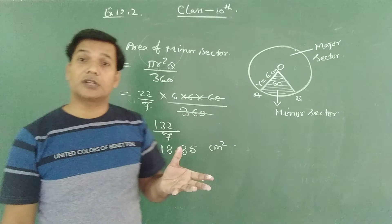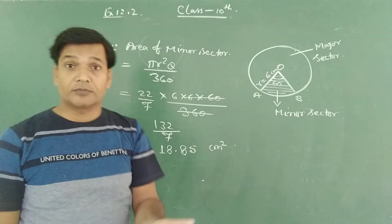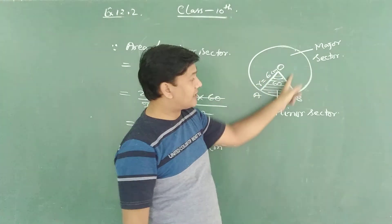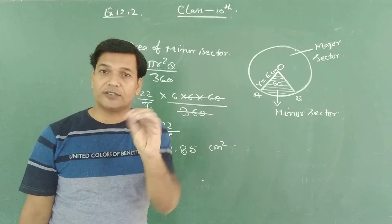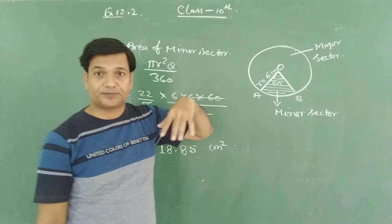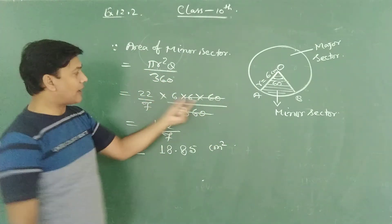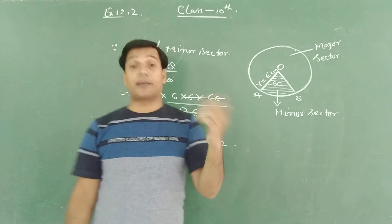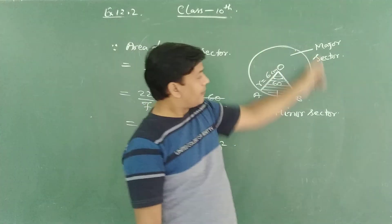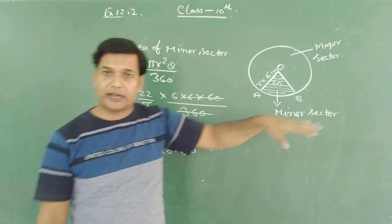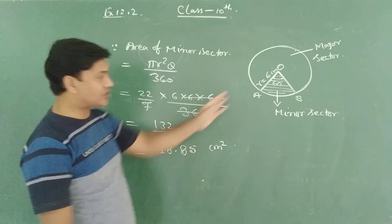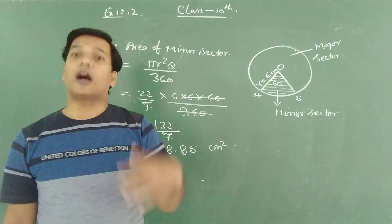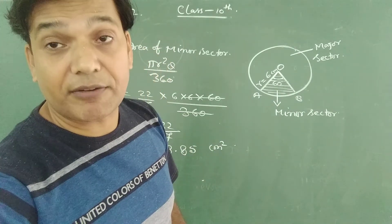If you want to find the area of the major sector, just change the angle θ. The major sector angle is 360 minus 60, which gives 300°. Substitute 300° in place of 60° to get the area of the major sector. Alternatively, find the area of the whole circle and subtract the minor sector area to get the major sector area.